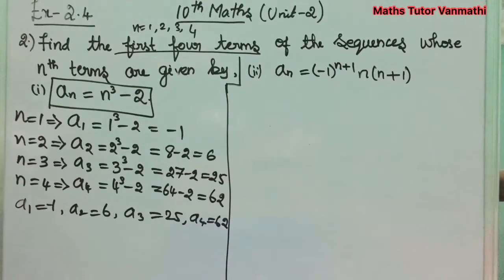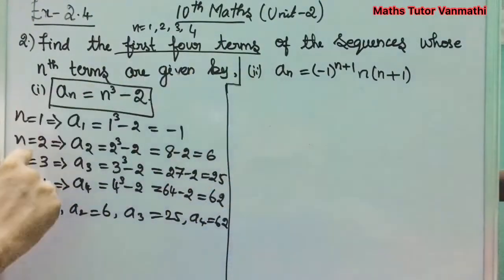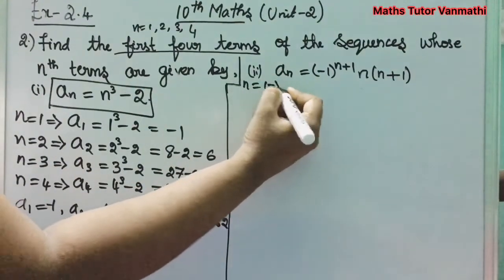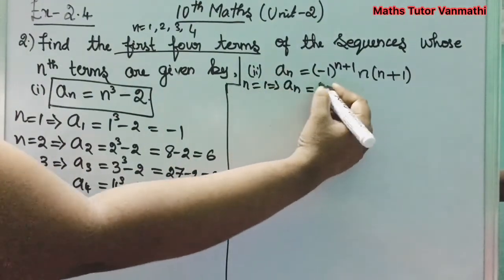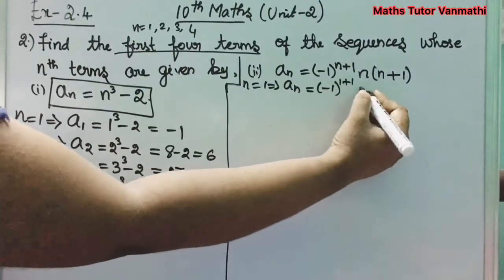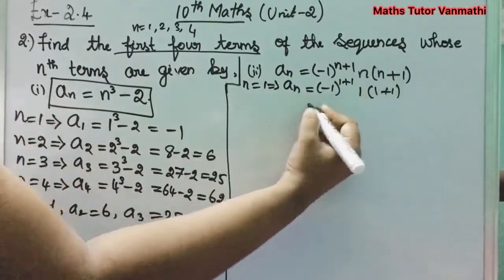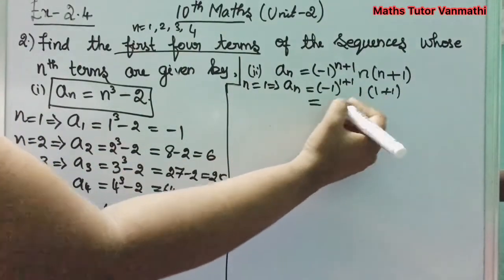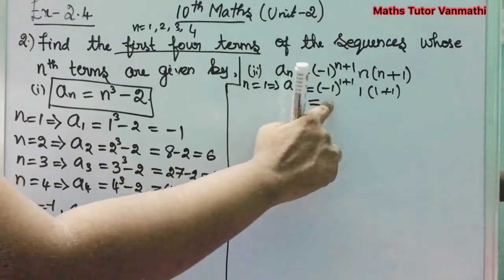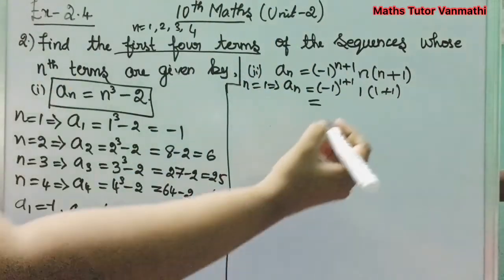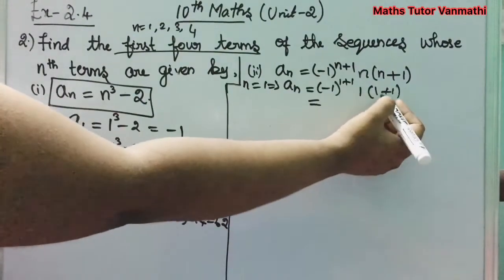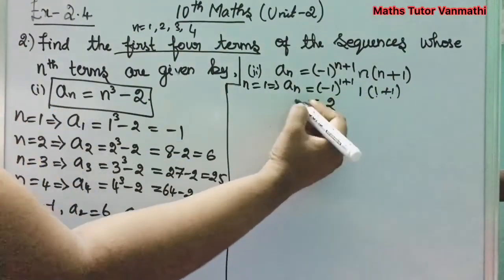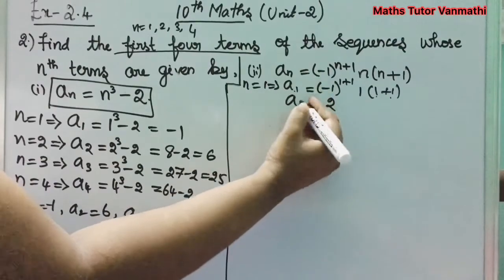Second subdivision: a_n = (-1)^(n+1) · n(n+1). For n = 1: a_1 = (-1)^2 · 1(1+1) = 1 × 2 = 2. Since the power is even, the answer is positive. So a_1 = 2. For n = 2: a_2 = (-1)^3 · 2(2+1). Since the power is odd, the answer is negative: a_2 = -2 × 3 = -6.